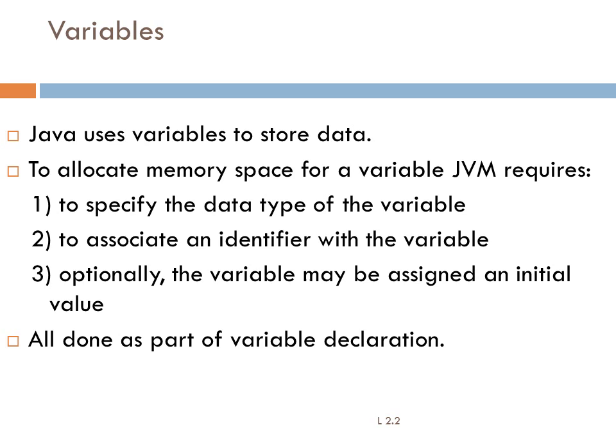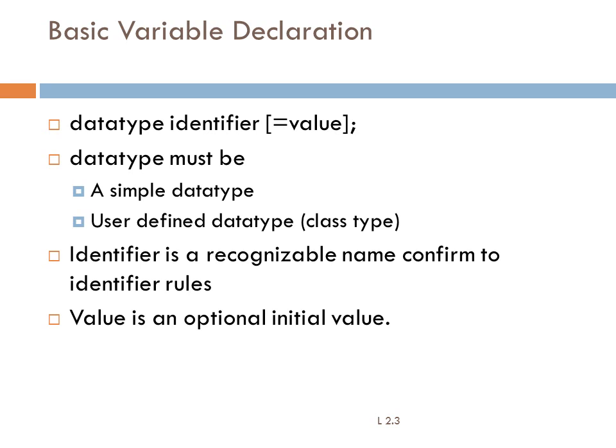Variables are used to store data in your program. To allocate memory space for a variable, JVM requires you to specify the data type, the variable name, and the default values when creating the variable. A variable can be declared at any part of the program. The basic variable declaration style is: data type, identifier, equals value.